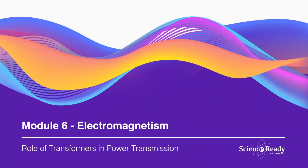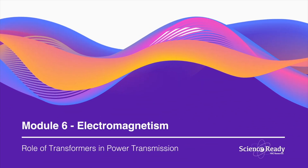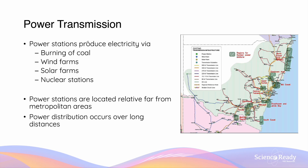Hey everyone, this video is on power loss during transmission of electricity. Power stations can produce electricity through different means. This includes the burning of coal, the use of wind farms and solar farms, and the conversion from nuclear energy into electrical energy.